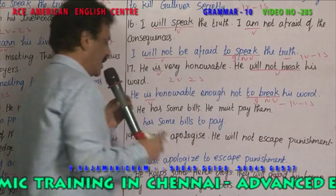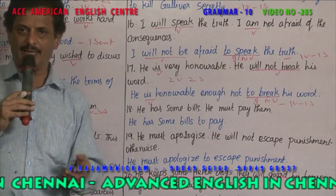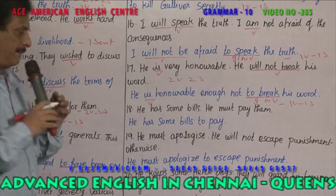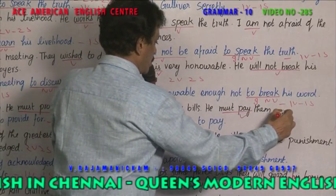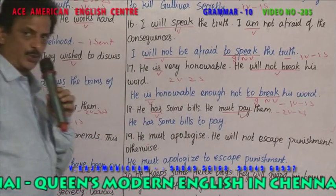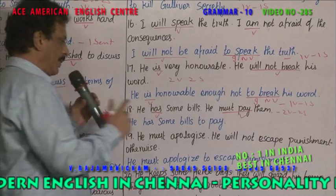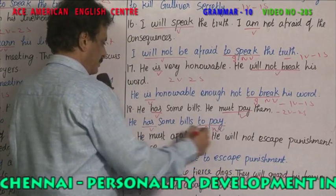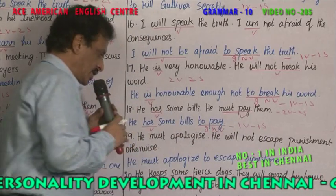Example 13: 'He has some bills' — electricity bill, water bill — 'has' is a verb. 'He must pay them' — 'must pay' is the verb. Two verbs, two sentences. Combined: 'He has some bills to pay.' 'To pay' becomes an infinitive, not a verb. 'Has' is the single verb. One verb, one sentence.